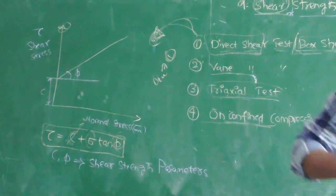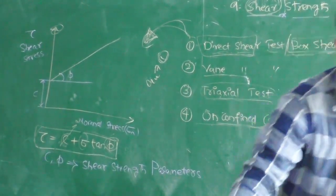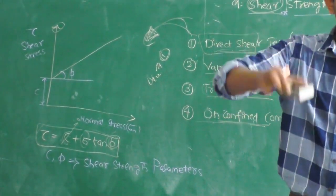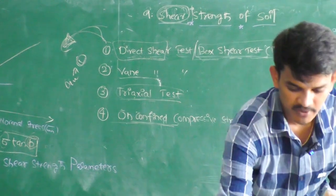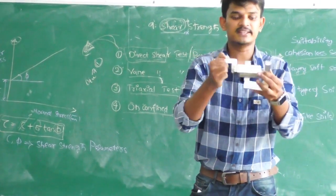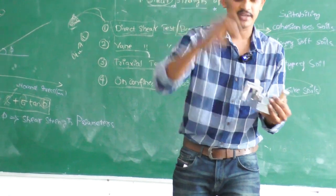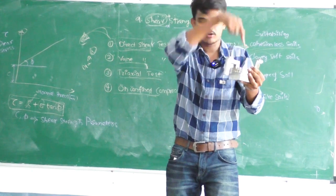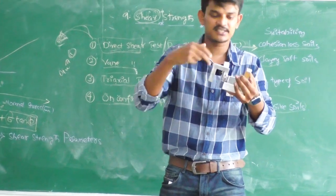This is the box that we use for performing direct shear test. We will collect the soil sample using this cutter — we will ram it into the soil and take the soil sample, then place it into this separatable mould. This mould is separatable and is in the form of a box, that is why we call it box shear test. We will place the whole setup into the equipment and apply some normal loading onto it, and see at what shear stress it is failing.